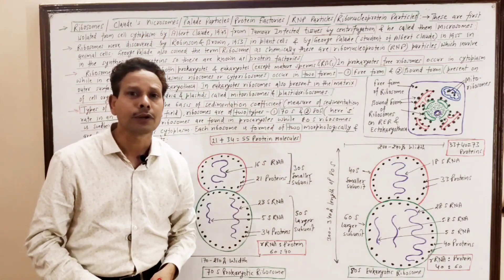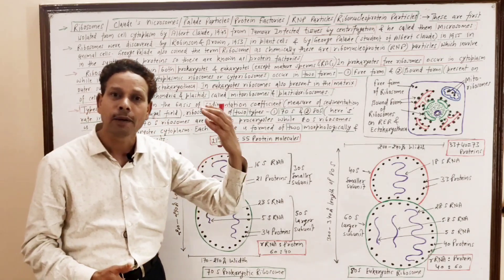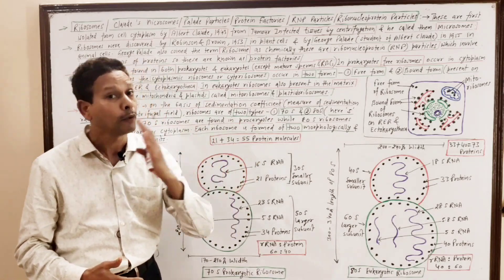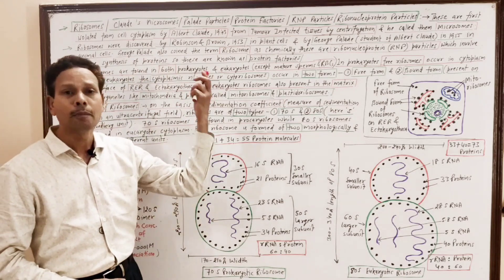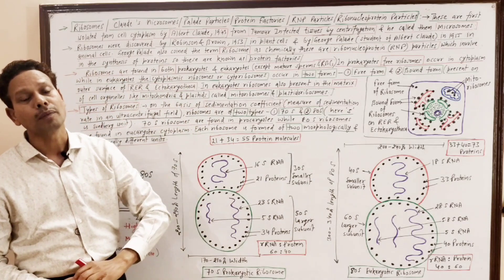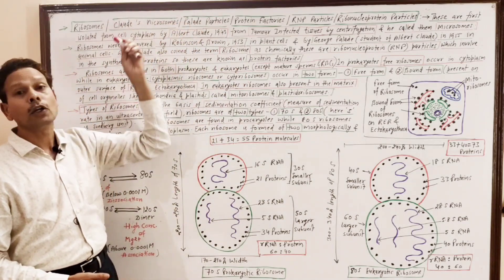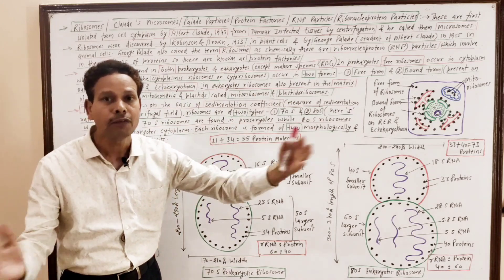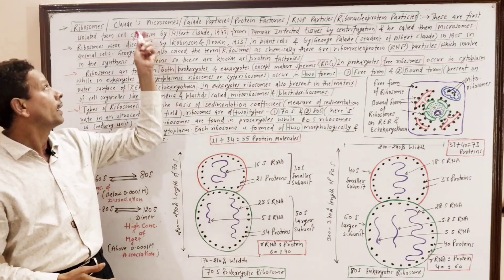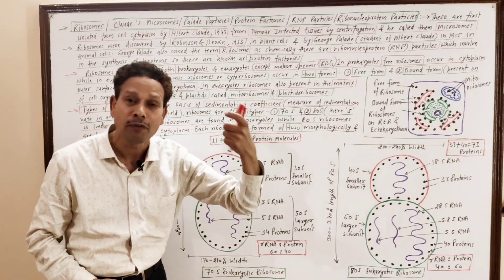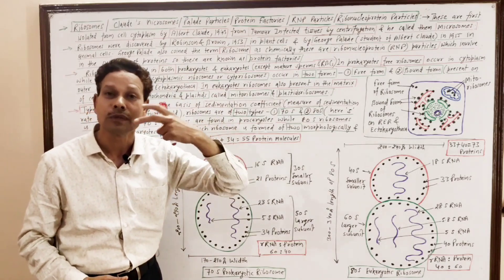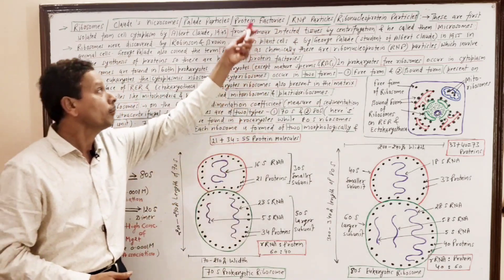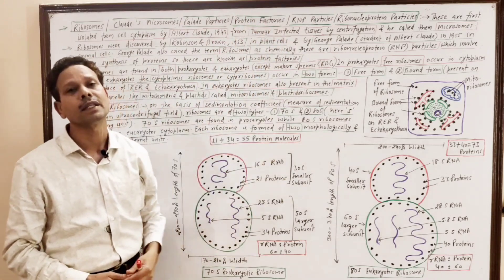This is all about the general introduction of ribosomes. As these are made up of RNA and protein molecules, these are ribonucleoprotein particles — also called Palade particles. George Palade coined the term ribosomes; he was a student of Albert Claude. Claude first isolated these ribosomes from tumor-infected tissue during centrifugation and coined the term microsomes. These microsomes are made up of RNA and proteins, so these are ribosomes — or RNP particles. These are protein factories as they are involved in protein synthesis.